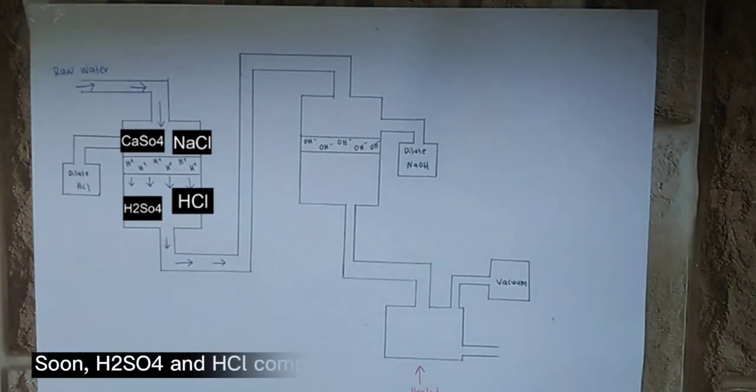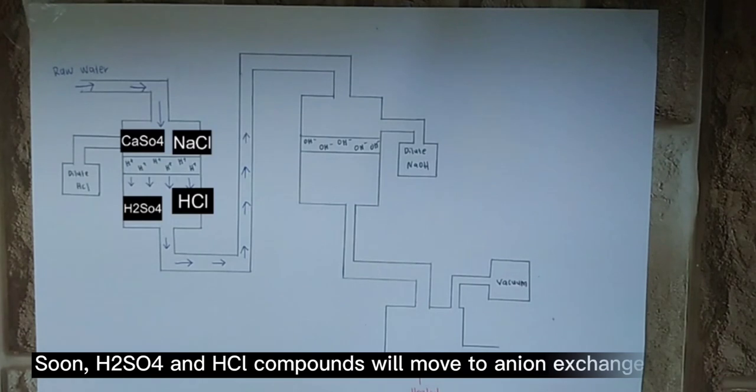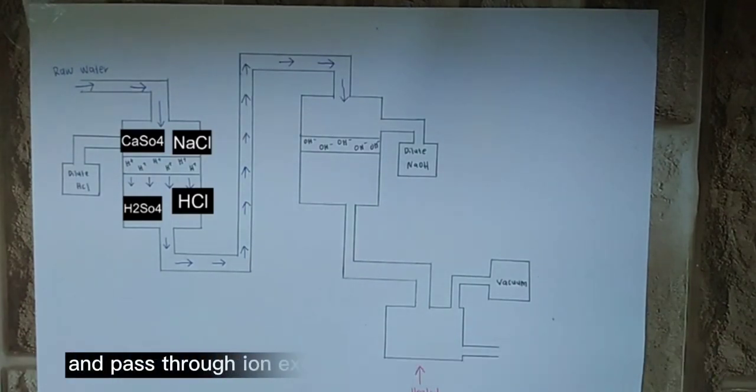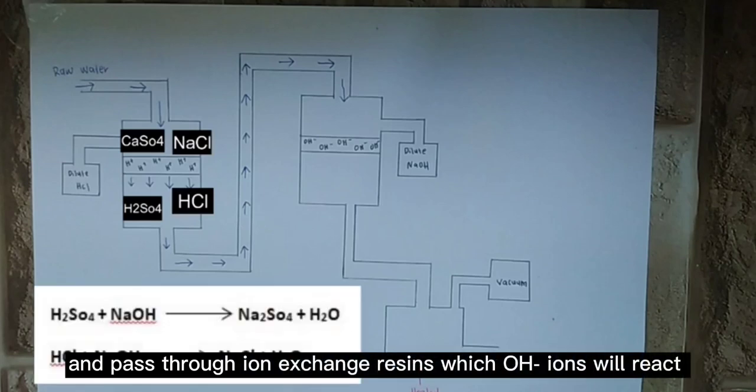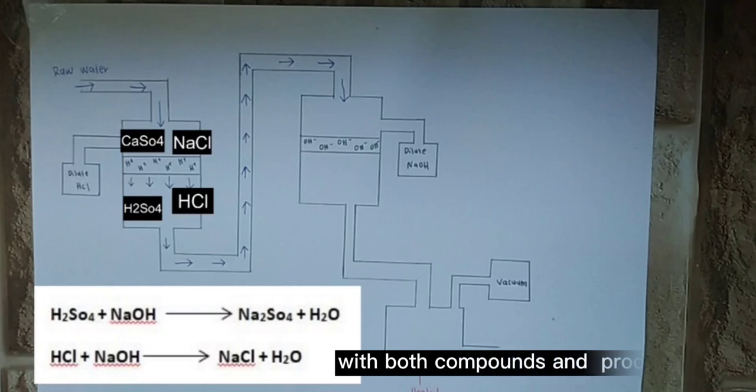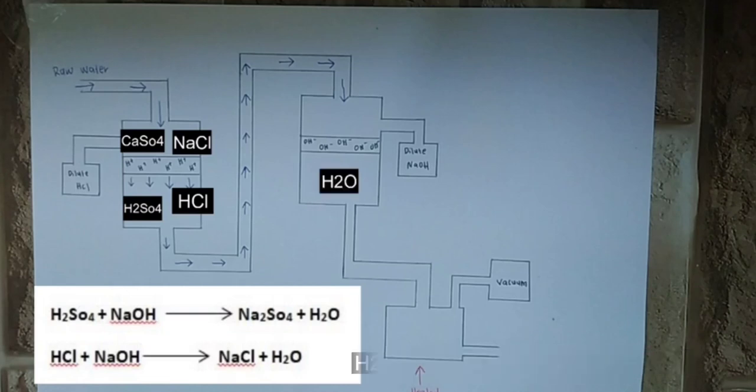H2SO4 and HCl compound will move to the anion exchange column and pass through anion exchange resins where OH-minus ions will react with both compounds, producing H2O or known as deionized water.